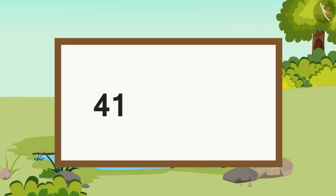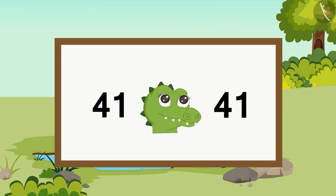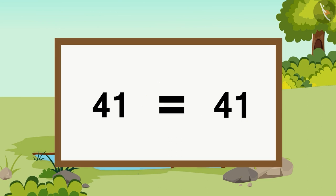Now, we will use the numbers 41 and 41. Both these numbers are equal. When the numbers are equal, Crocs does not open its mouth. This is why we use the equals to symbol and say that 41 is equal to 41.